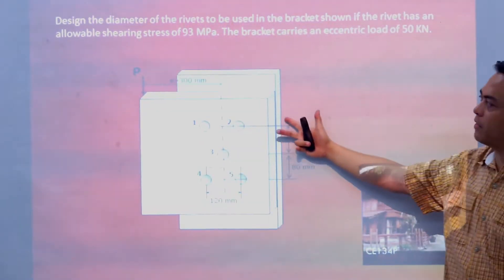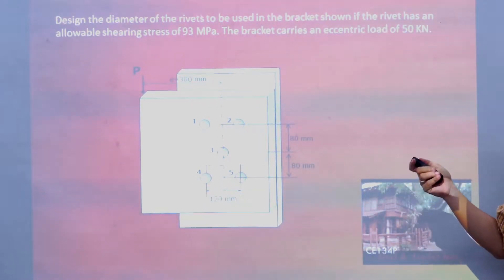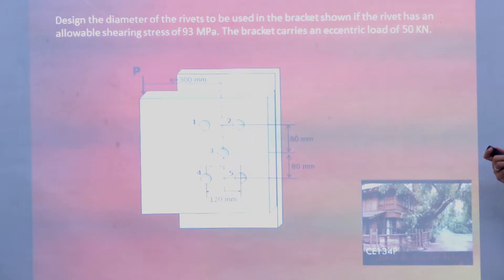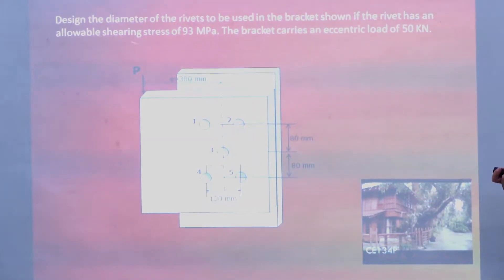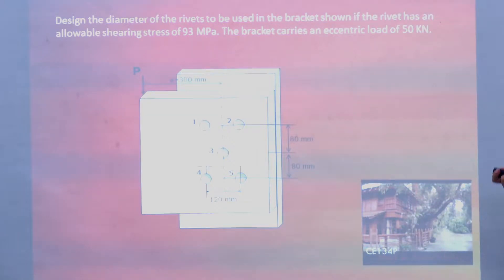From this problem, the design for the diameter of the rivets to be used in the bracket shows that the rivet has an allowable shear strength of 93 MPa. That is the specification of the shear strength of the rivets used.